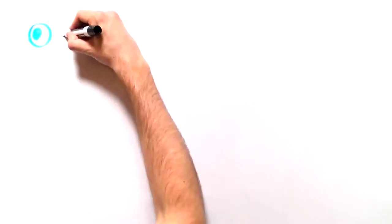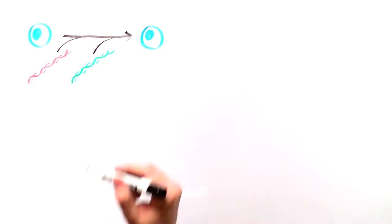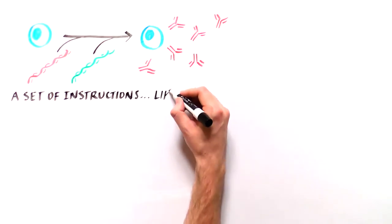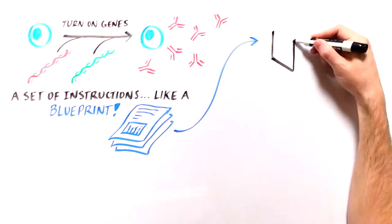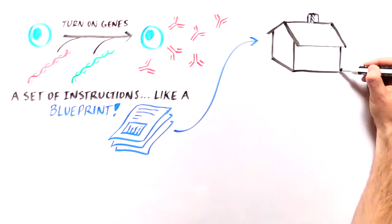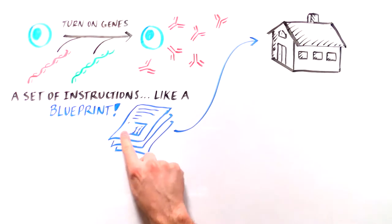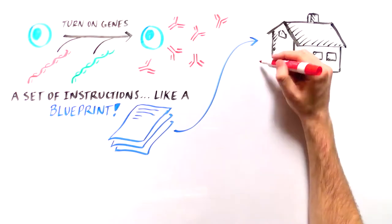To be able to develop and function, cells of the immune system follow a set of instructions and turn on specific genes. This is much like how you would use a blueprint when building a house. If a detail is left out of the blueprint, you may end up with a house without a door.